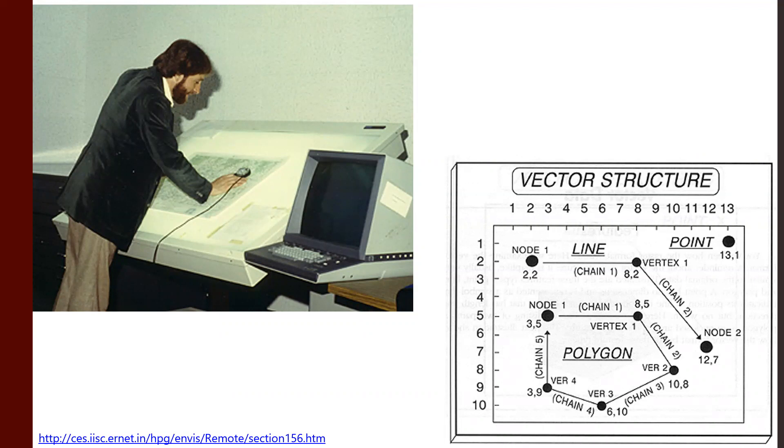And our line starts at 2, 2, and then goes to 8, 2, and then goes to 12, 7. Those points become the nodes and the vertices. That's the way.